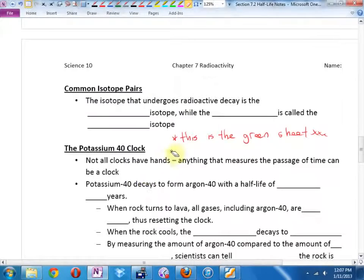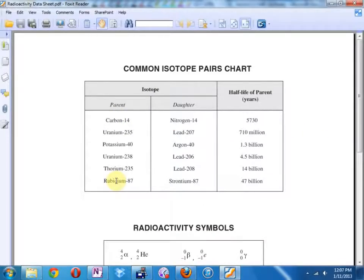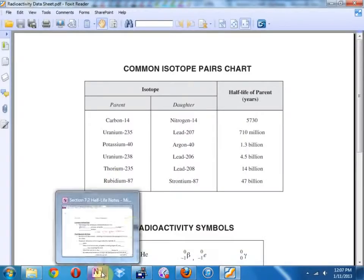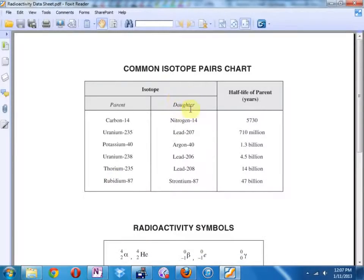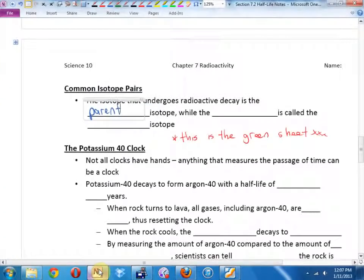Let's continue with the notes then. So, some terminology. The isotope that undergoes radioactive decay is called the parent isotope. In your chart, this first column, those are the parent isotopes. Those are where we're starting at. And you can see from the chart what do we call the product after radioactive decay? The daughter. While the product is called the daughter isotope.